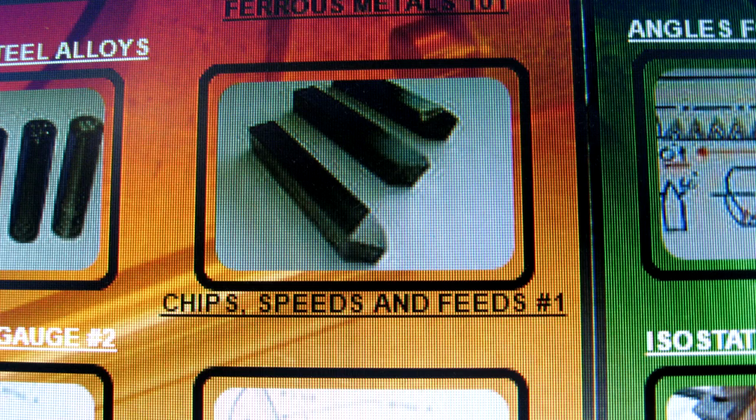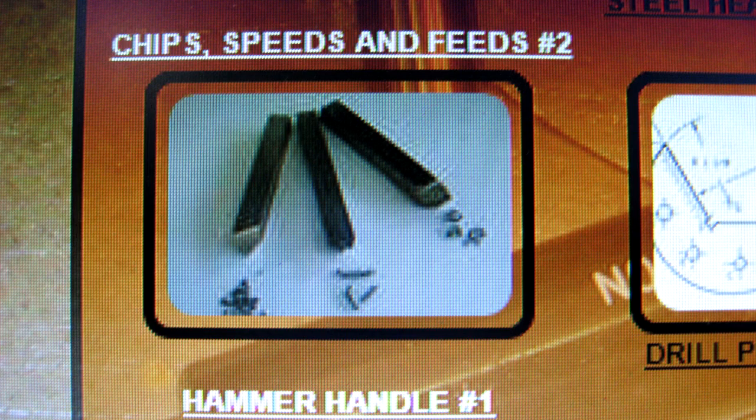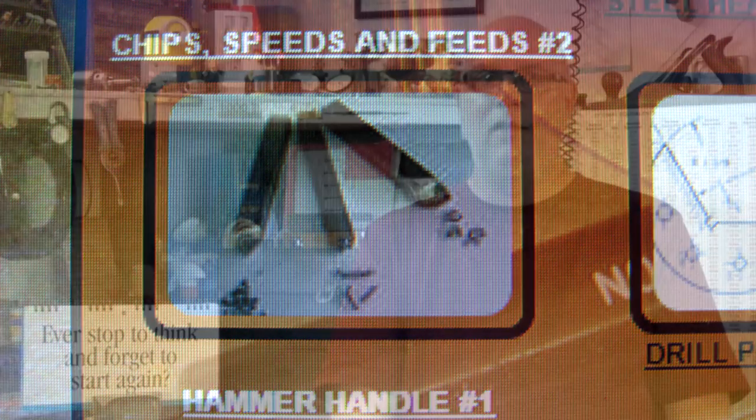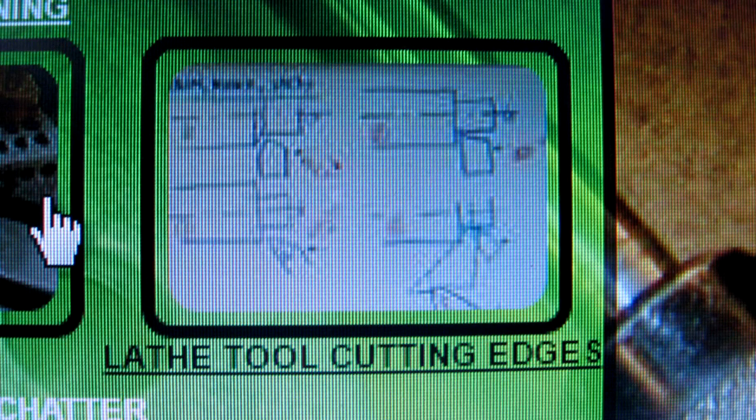If you head over to page three and scroll down in the orange section, you'll find two videos about chips, speeds and feed, part one and part two. And if you stay on that same page three and look over in the green section, you'll find a little quickie about lathe tool cutting surfaces or cutting angles. So take a look at that if you want to understand a little more about what's going on.